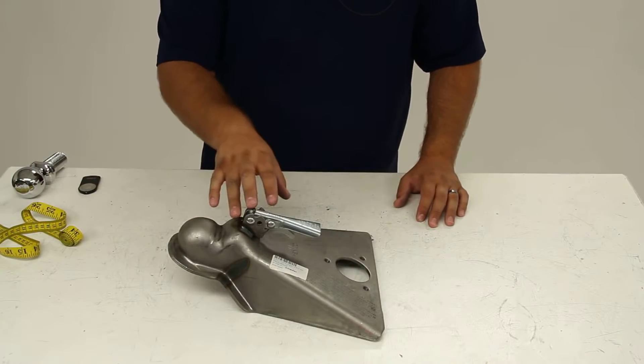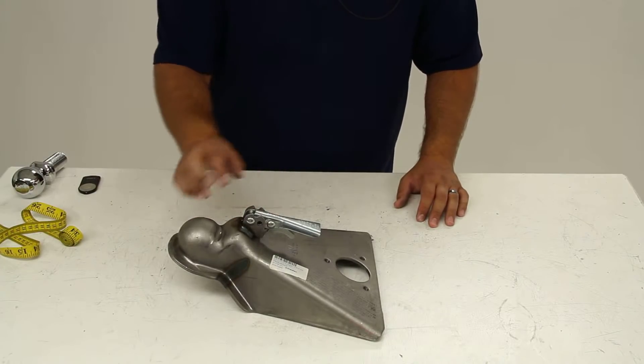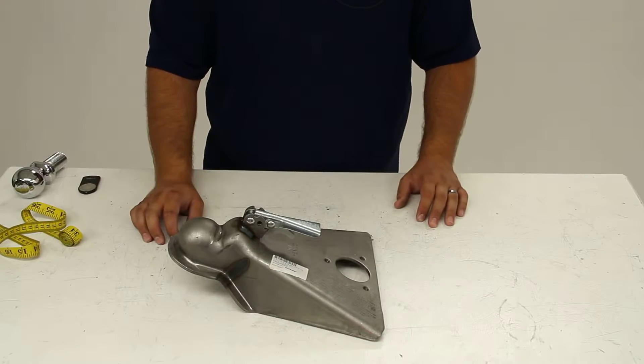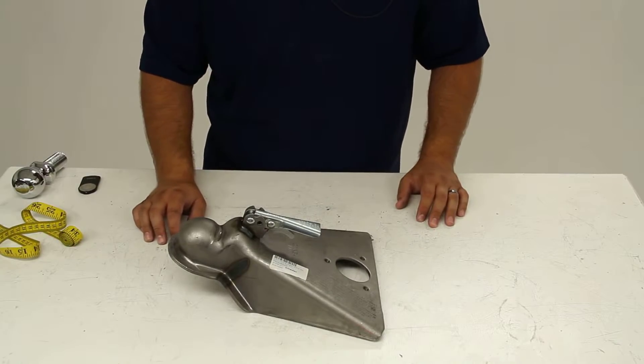Now Fulton covers this coupler with a limited 3 year warranty and it has a gross trailer weight capacity of 10,000 pounds. Again it's designed to be used with trailer balls that measure 2 and 5 sixteenths inches.